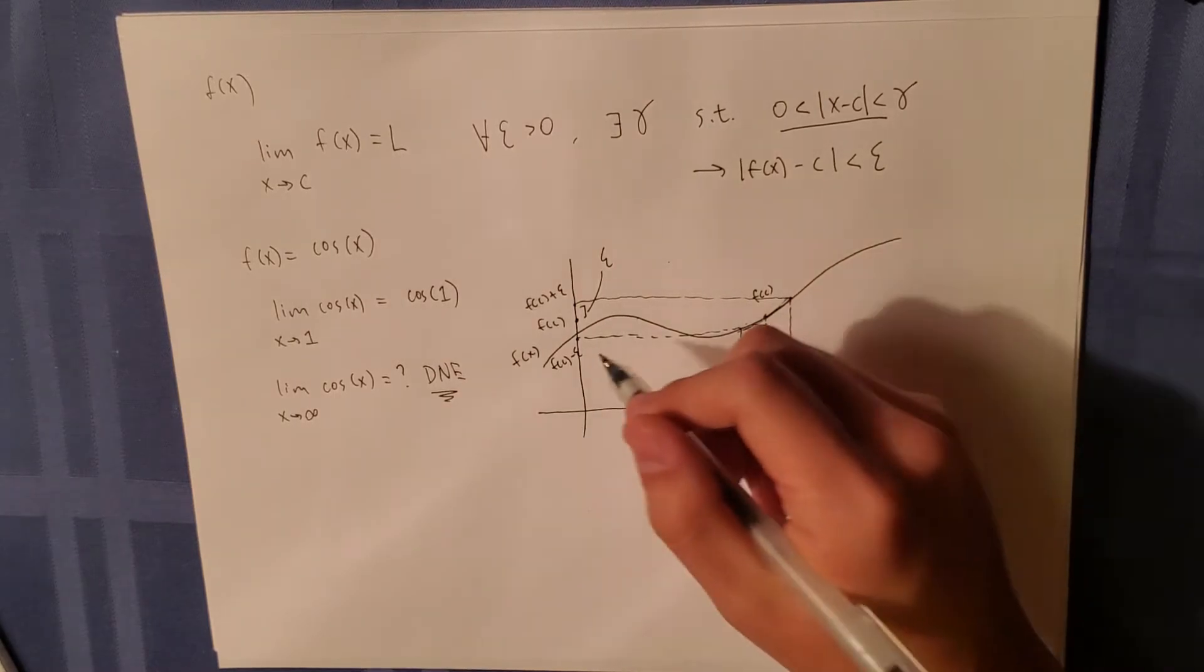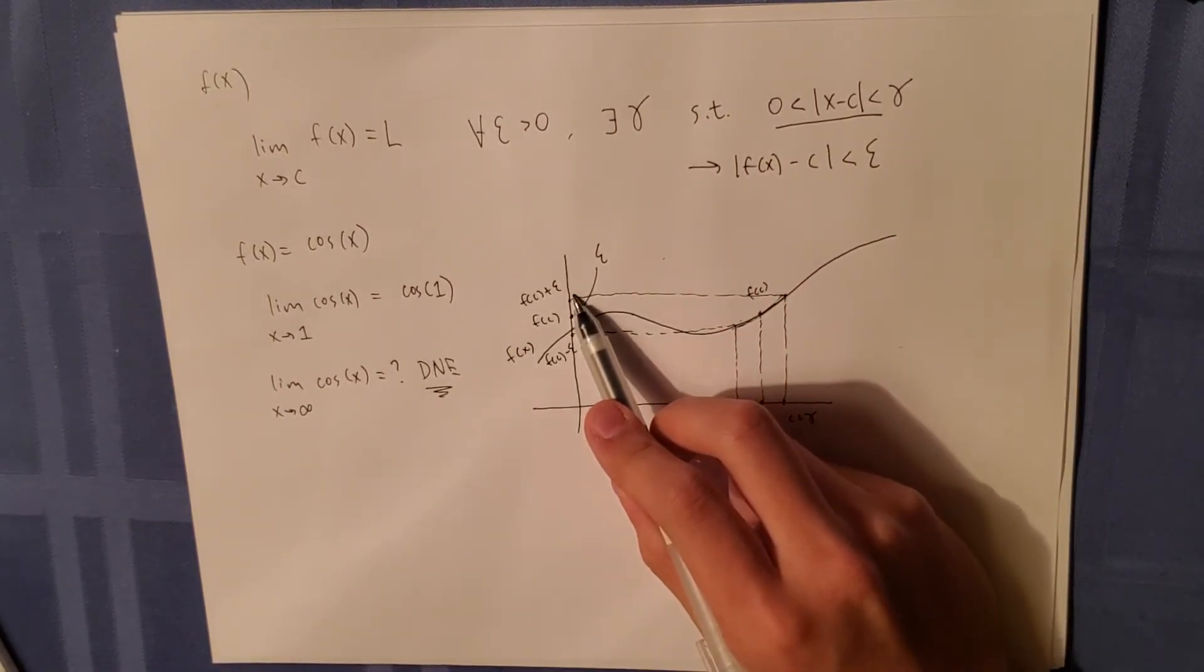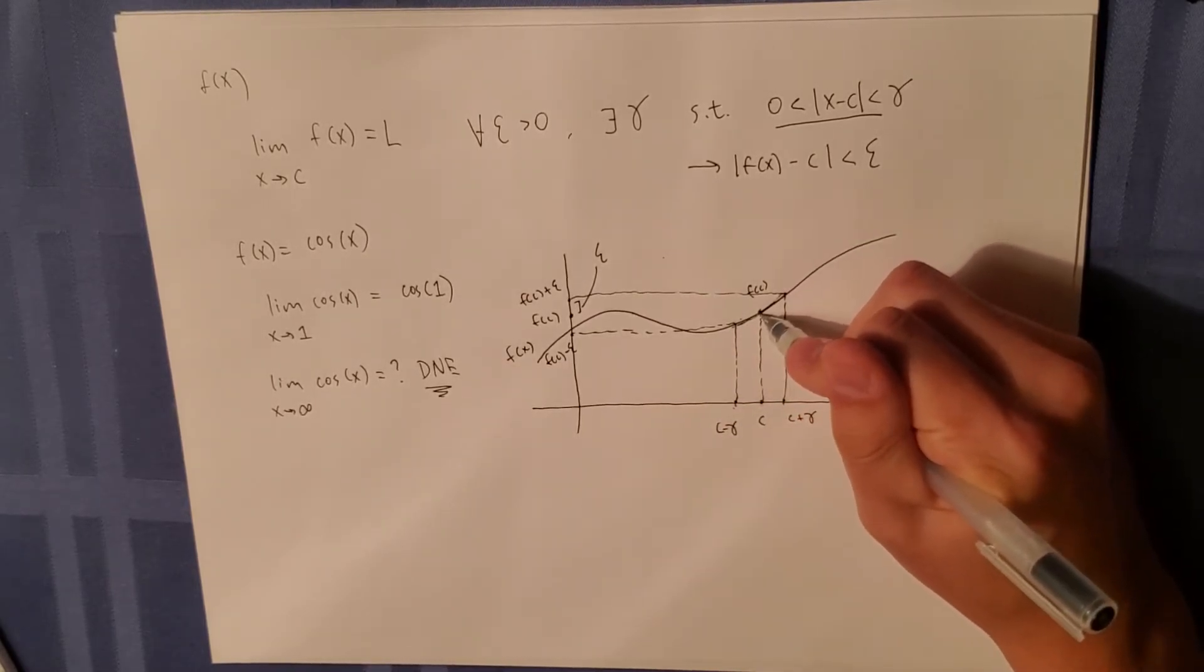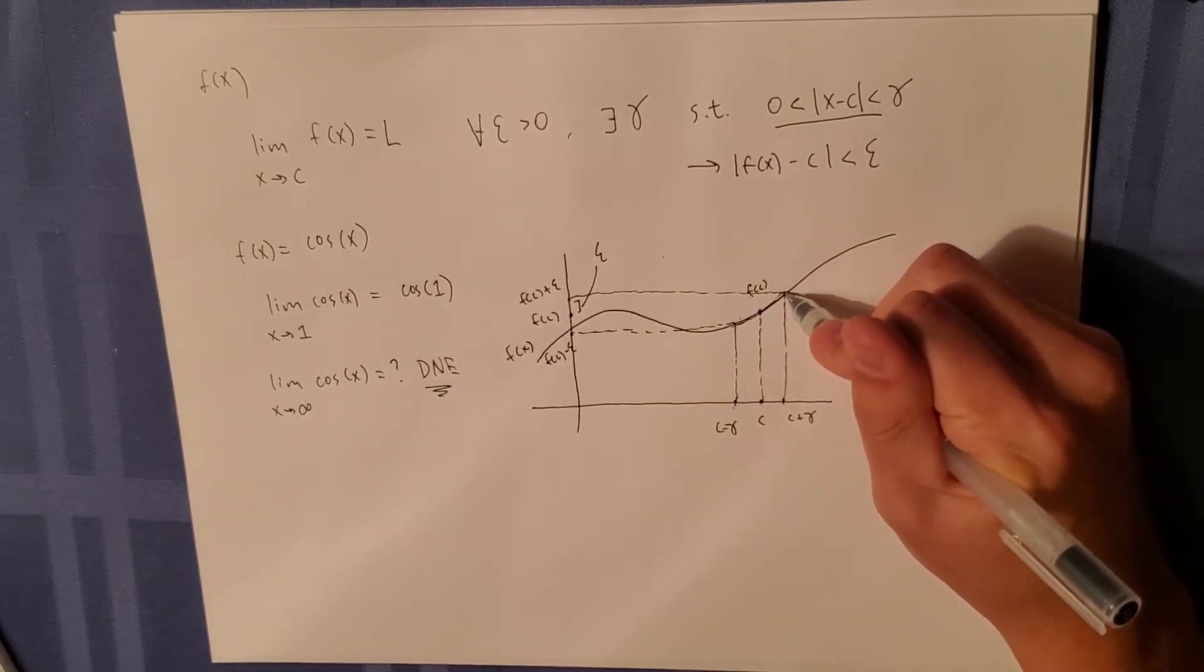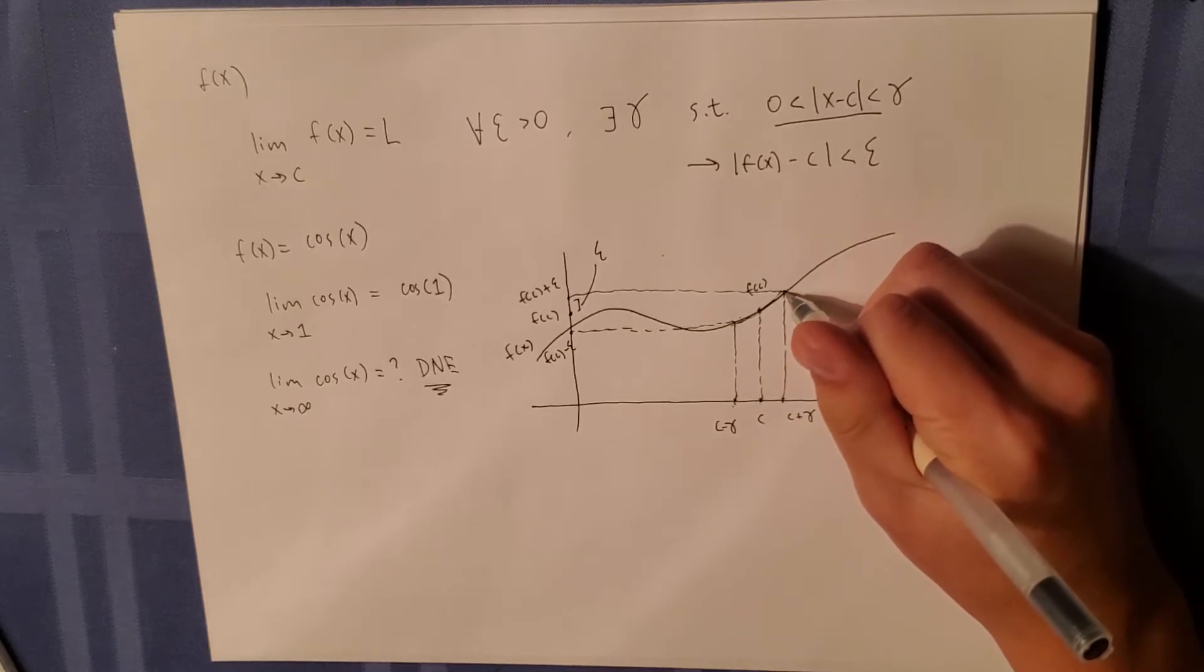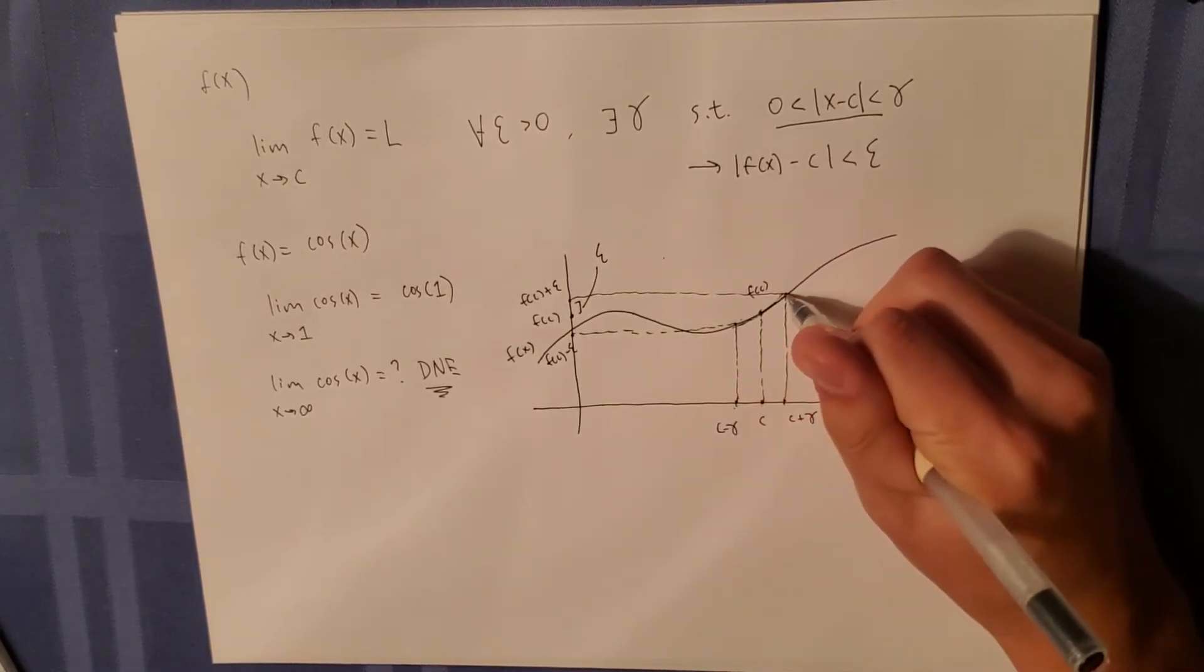Sometimes when you have f of c minus epsilon and f of c plus epsilon, you will get two different deltas. One delta might be closer to c versus another delta. For this definition, you can simply just take the smaller delta so that the bounds will match correctly.